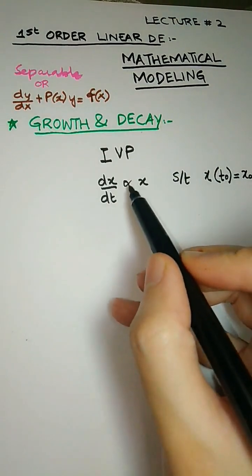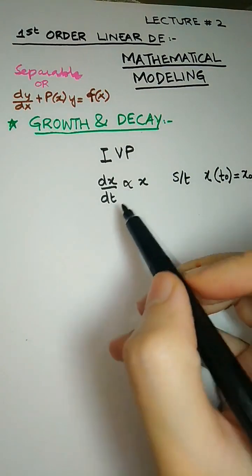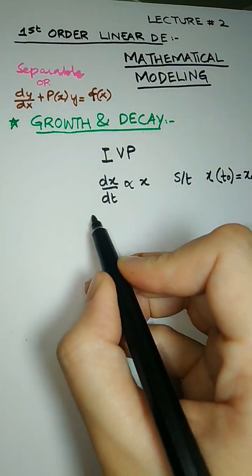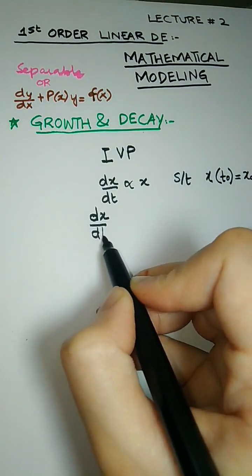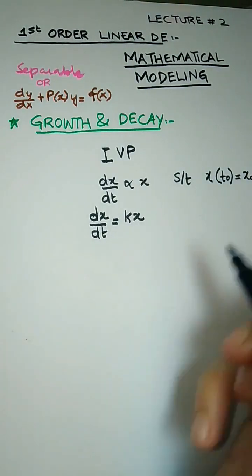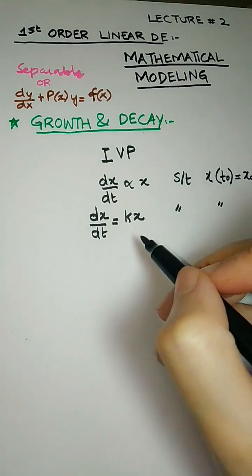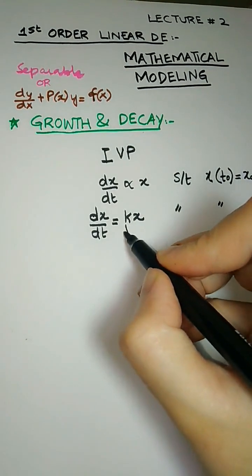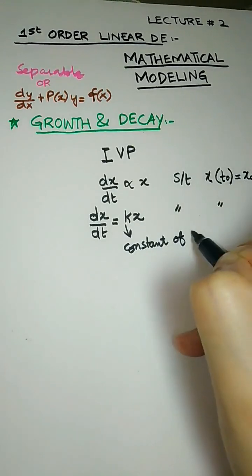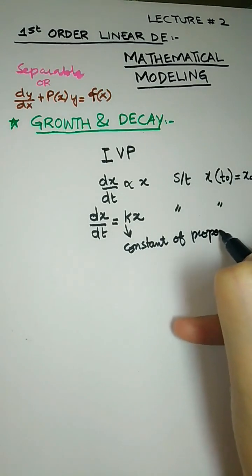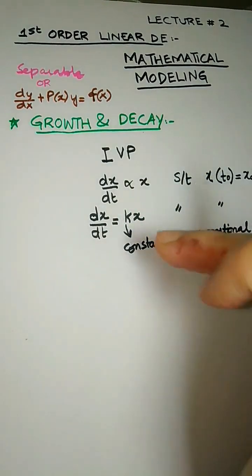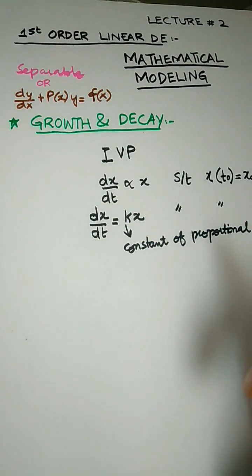We convert the proportionality into an equation: dx/dt equals k times x. Here k is the constant of proportionality. This is the growth and decay model.